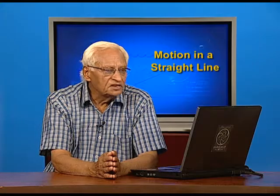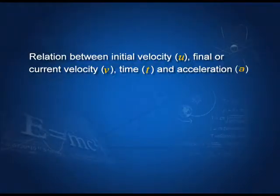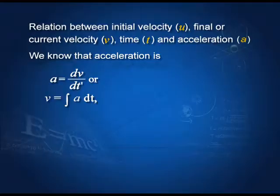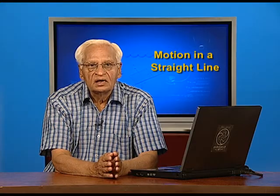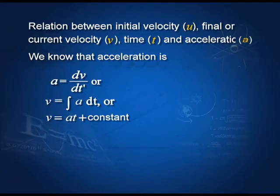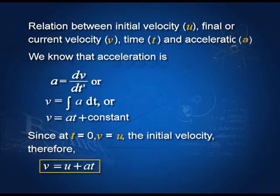The relation between the initial velocity u, the final velocity v, time t, and acceleration a can be found as follows. We know that a = dv/dt, so we integrate this and get v = ∫a dt, or v = at plus a constant. The constant is determined by the initial conditions: at t = 0, velocity equals initial velocity u. Therefore, we get the equation v = u + at, because the constant becomes u.